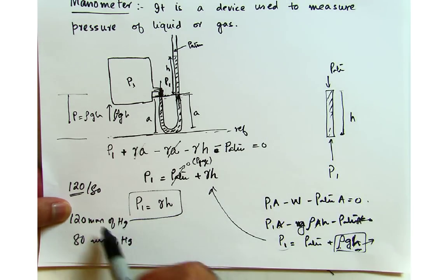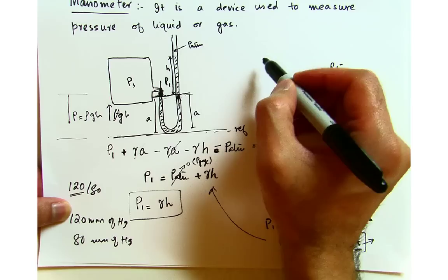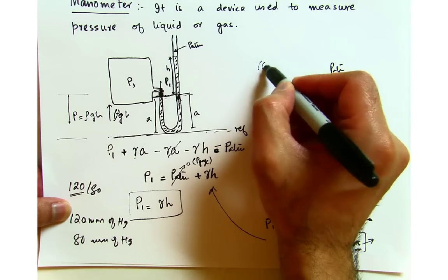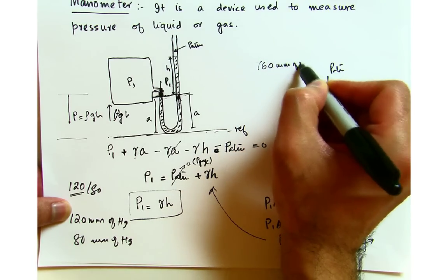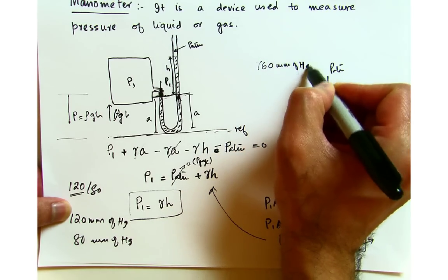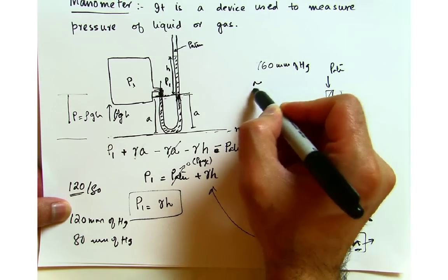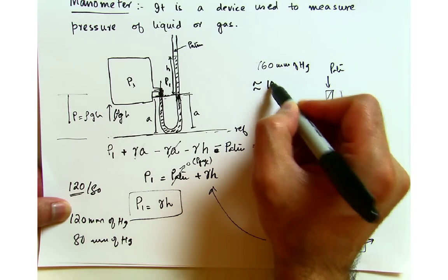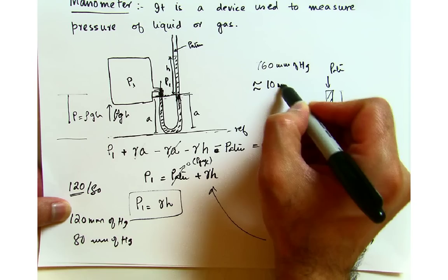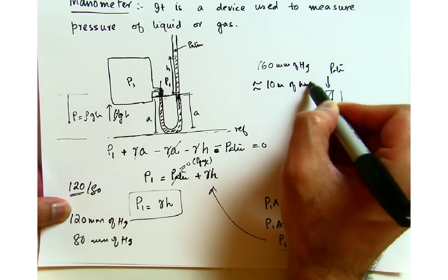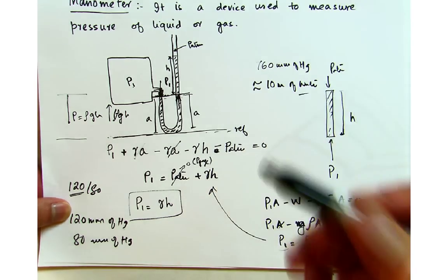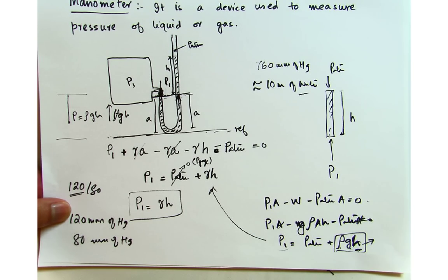For the same amount of atmospheric pressure — 760 mm of Hg — for water it will be somewhere around 10 meters. So that's why you don't use water, but you can certainly use it if you want to.